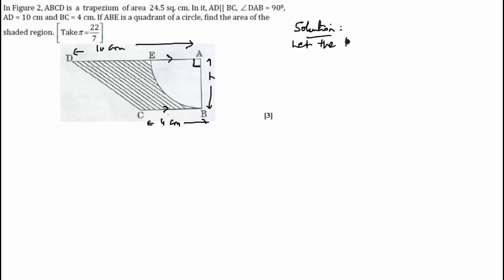Let the height of trapezium be h centimeters. Therefore, area is equal to 24.5 centimeter square. This implies, just putting the formula, half h into sum of the parallel sides.